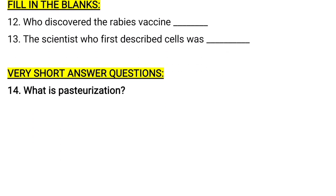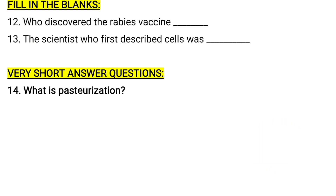What is pasteurization? Pasteur developed the process of pasteurization to prevent spoilage and improve food safety. It involves heating liquids like milk and wine up to a certain temperature to kill harmful microorganisms without affecting the quality of the product. That process is pasteurization, invented by Louis Pasteur. I will share the answer in the last session of this video.